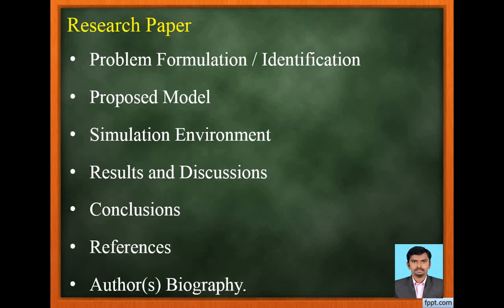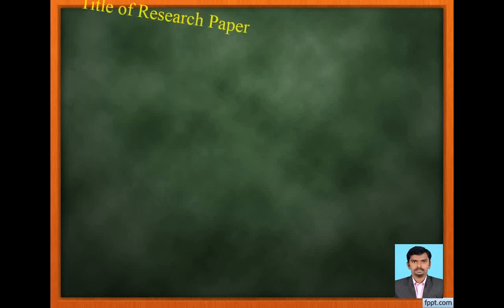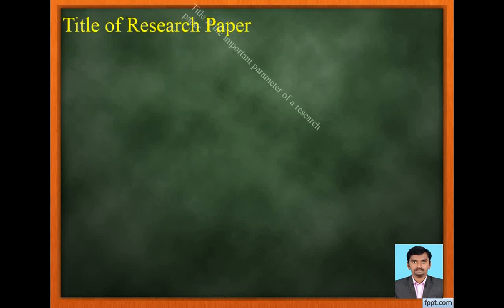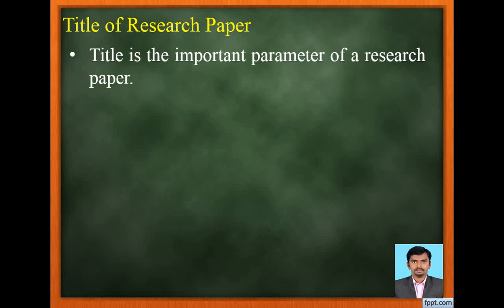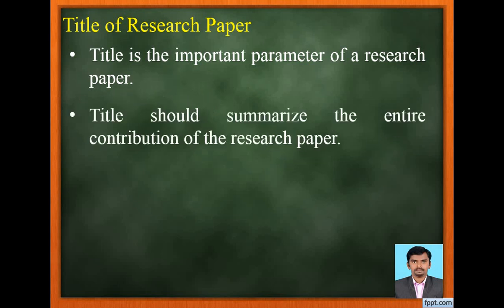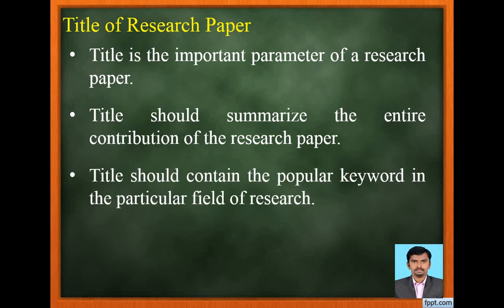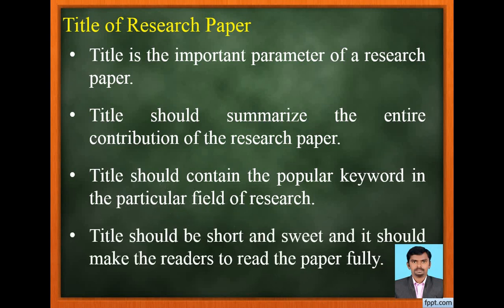And lastly, author biography. Now let us see all these one by one. Title is the important parameter of a research paper. Title should summarize the entire contribution of the research paper. It should contain the popular keyword in the particular field of research, and it should be short and sweet, making readers want to read the paper fully.